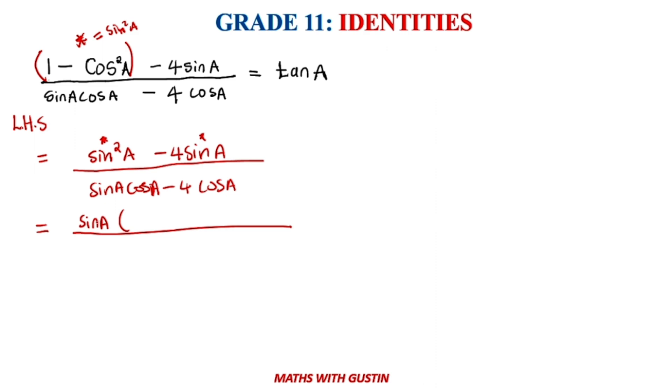So what do you have? If you take out sinA, you are going to be left with sinA here. So that when you remove the bracket, it goes back to sin²A. Therefore, you're going to have minus 4 here.